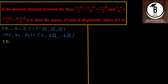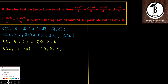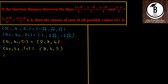Now the other values: direction ratios a₁, b₁, c₁ from the first line are 2, 3, 4. Similarly a₂, b₂, c₂ from the second line are 3, 4, and 5. All details are noted; now let's come to the main question, i.e., the shortest distance.